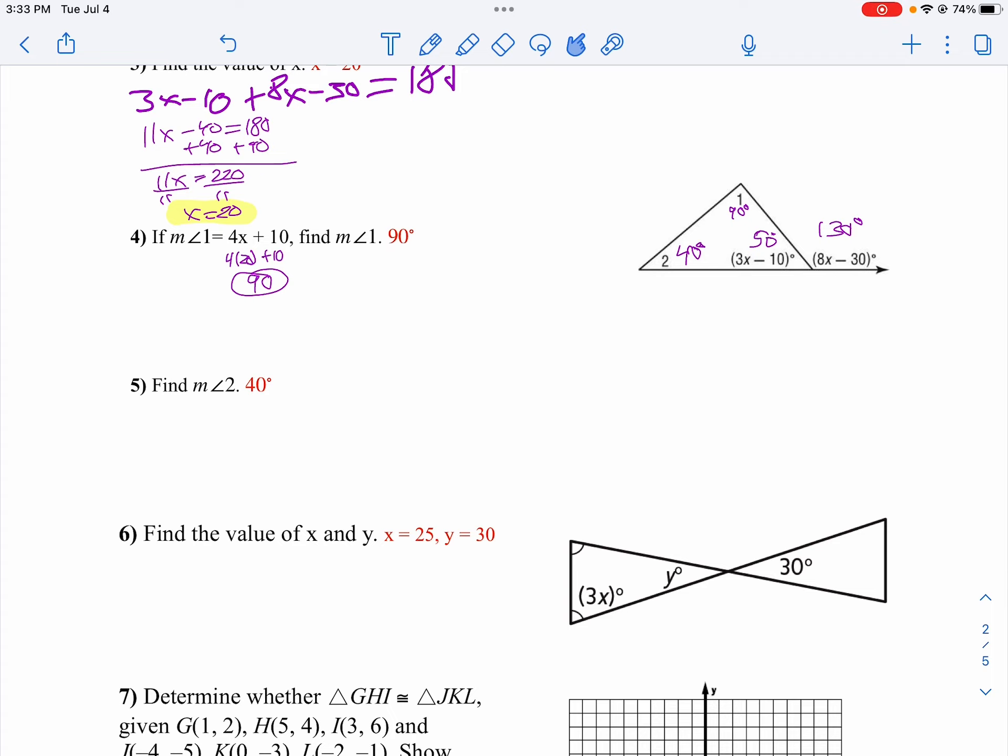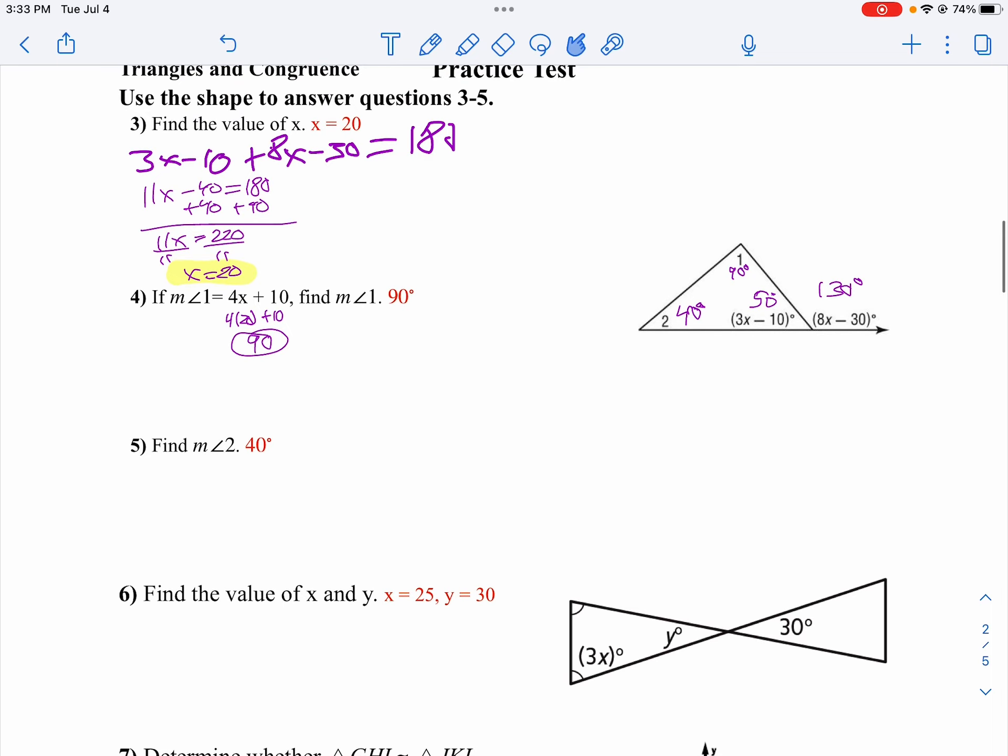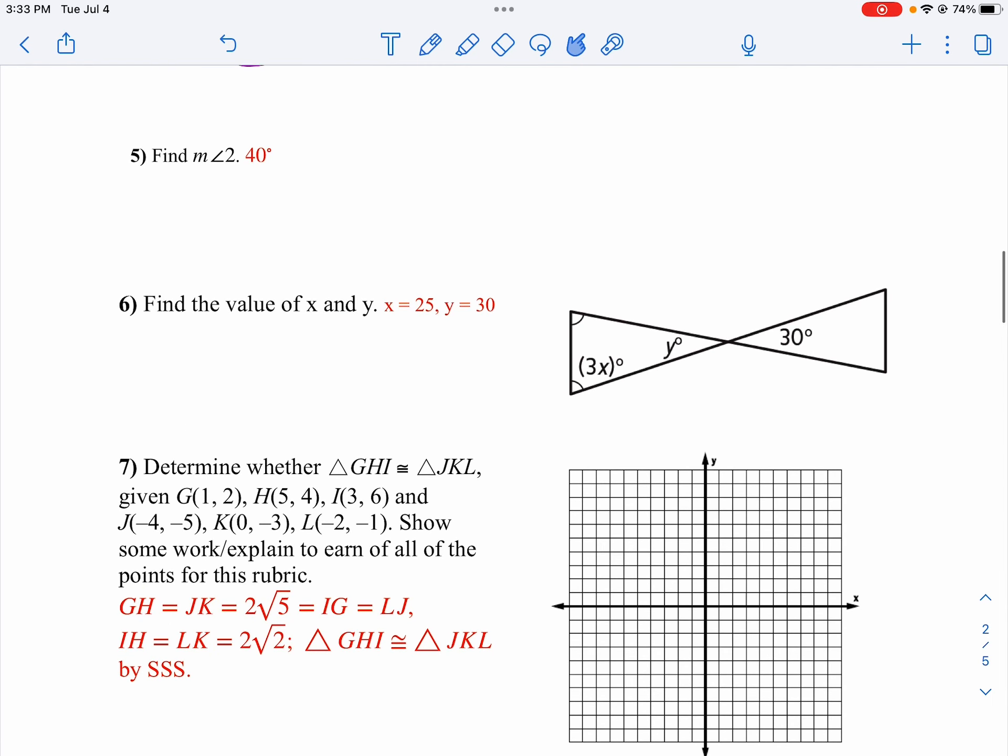Not a lot of work to show on that one because we used it on questions 3 and 4. Now in question 6 we want to find the value of x and y. Well notice there's no work to do for y. y is going to be 30 degrees. It's going to be 30 degrees because these two are indeed vertical angles.